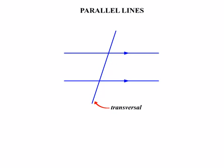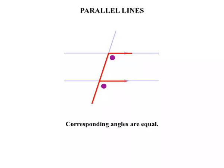And the transversal forms a series of angles. Let's look at firstly these two angles. These are known as corresponding angles and they are equal. If we were to trace these angles and look at the letter, it looks like an F doesn't it? Sometimes referred to as F angles.